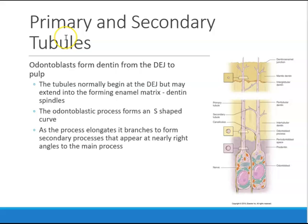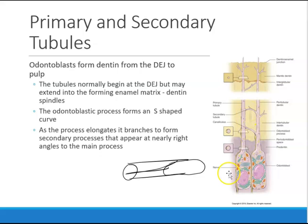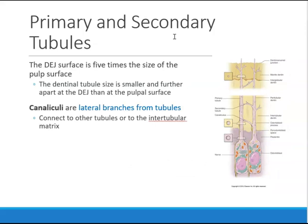Primary tubules are the main dentinal tubules — the odontoblast lives in that main tubule. Sometimes the tubule branches off, and those branches are known as secondary tubules, also called canaliculi. So canaliculi are those lateral or secondary branches that come out from the primary tubules.